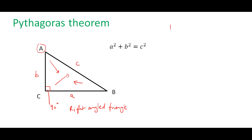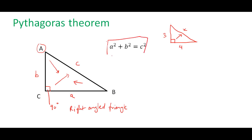Let's do an example. Suppose I have a right angled triangle and we have this as 3 units and this as 4 units, and we want to find the length of this side here, which we know is the hypotenuse because it is opposite the right angle.